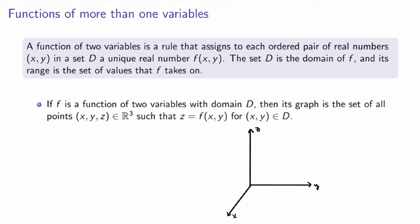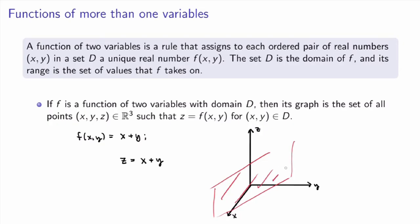If we have a function of two variables we can sketch its graph, but it won't be a curve anymore — the graph will be a surface in three-dimensional space. The graph is the surface traced by the equation z equals f, in three-dimensional real space parametrized by x, y, and z. For example, if my function of two variables is x plus y, then its graph will be the surface traced by z equals x plus y in three dimensions — that will be a plane going through the origin.